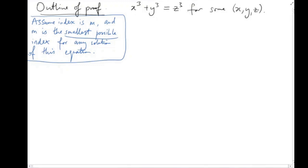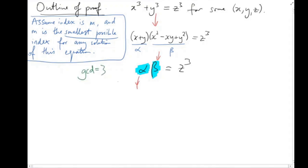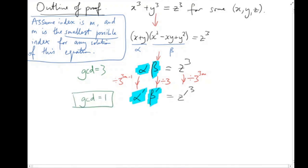First, factorize over the integers: x³ + y³ = (x + y)(x² − xy + y²) = z³. Call those factors α and β, so α·β = z³. To apply the fundamental lemma — remembering the integers are a UFD — we calculate that the gcd of α and β is 3. So divide out all the 3s to get α′·β′ = z′³ with gcd(α′, β′) = 1. Applying the fundamental lemma: α′ = a³ and β′ = b³ for integers a and b, taking units to be 1.